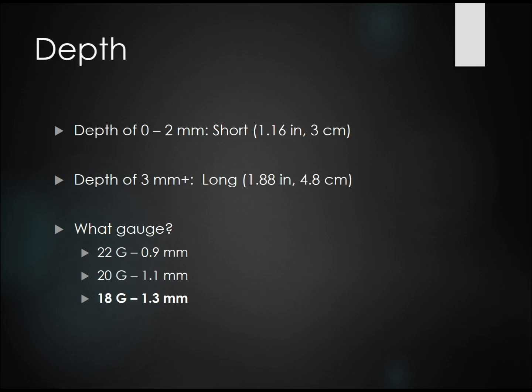Let's talk about depth to the vein and catheter length. For a vein less than two millimeters deep, you might consider a short catheter — here at Mass General Hospital, our short catheters are 1.16 inches. Once veins get deeper than three millimeters, I recommend using a long catheter; here we have 1.88-inch catheters. However, very superficial veins should be visible on the skin surface, so whenever you're placing an ultrasound-guided IV, please use a long catheter, 1.88 inches.